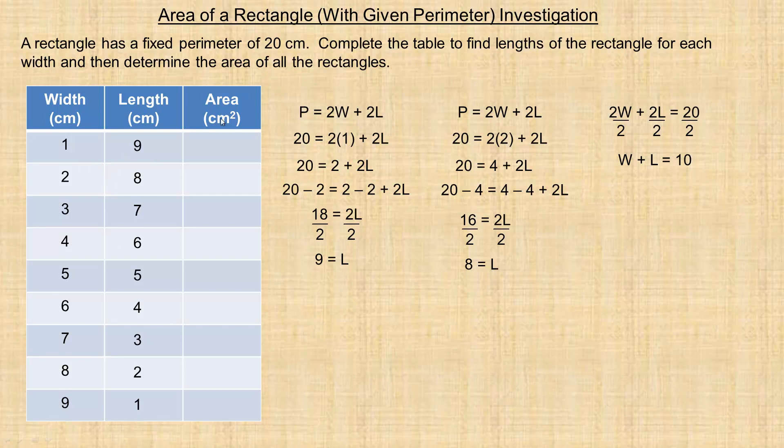So let's find the area now. Area of a rectangle is length times width. So 1 and 9 are our first length and width, so 1 and 9 multiply to 9, so this first area would be 9. The second one, 2 times 8—the length and width, 2 and 8—that will give us 16 here. 3 times 7 is 21, 4 times 6 is 24, 5 times 5 is 25, 6 times 4 is 24, 7 times 3 is 21, 8 times 2 is 16, and 9 times 1 is 9.